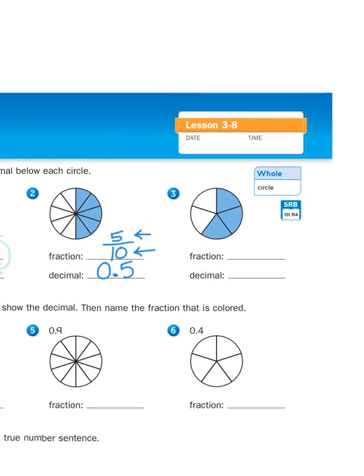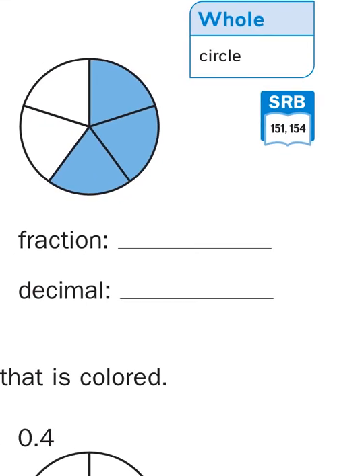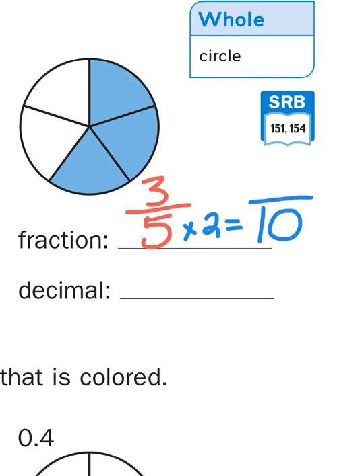But then we get to a problem like number 3. This fraction shows us 3 parts out of 5, 3 fifths. Now 3 fifths is not out of 10, but this is where we use our understanding of equivalent fractions. And I know that 10 is a multiple of 5, because 5 times 2 gives me 10.